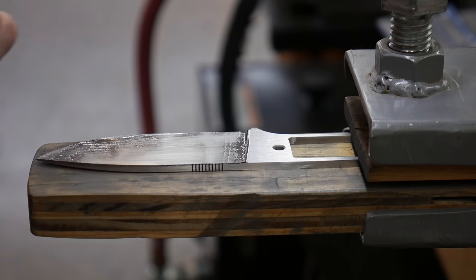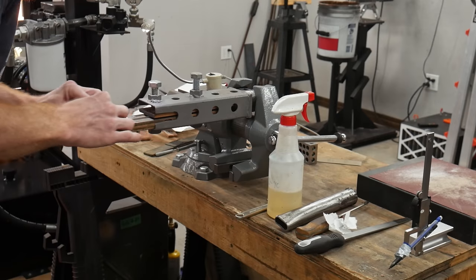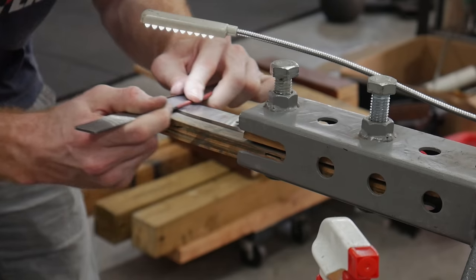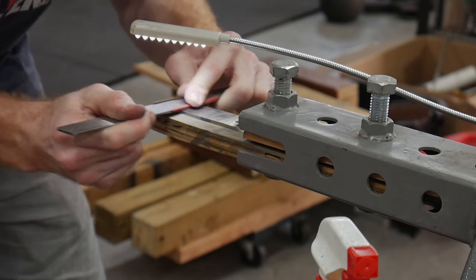I then hand sanded the blade up to a uniform 320 grit finish with Wright sandpaper. I started off with a hard backer to ensure that I sanded out any peaks and valleys on the blade.